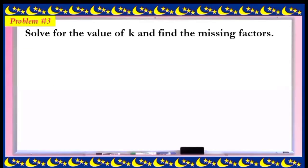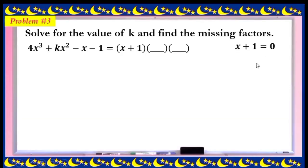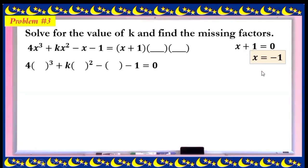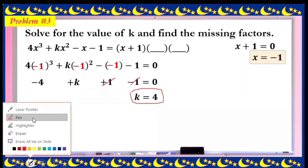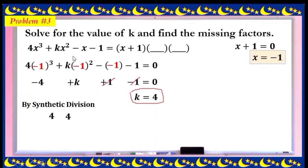Problem 3: solve for the value of k and find the missing factor, given that (x + 1) is a factor. From x + 1 = 0, x = -1. Substitute x = -1 into the polynomial: (-1)³ + 4(-1)² + k(-1) + (-1) = 0, giving -1 + 4 - k - 1 = 0, so k = 4 — wait, simplifying: the terms +1 and -1 cancel, so k = 4.